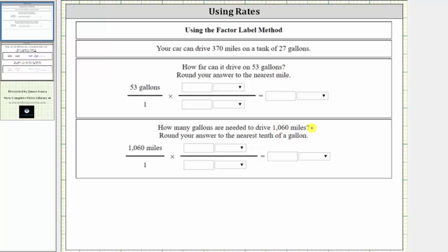We begin by writing the given information as two different rates. One way to write the rate is 370 miles per 27 gallons. Another way to write the rate is 27 gallons per 370 miles.